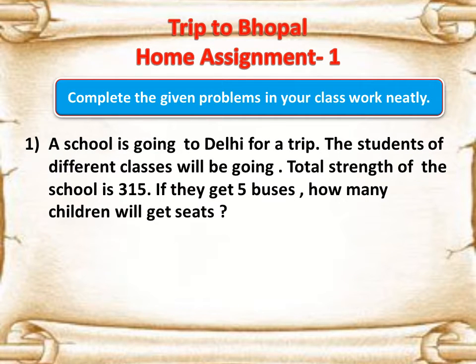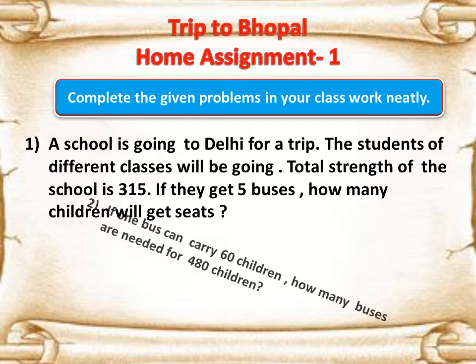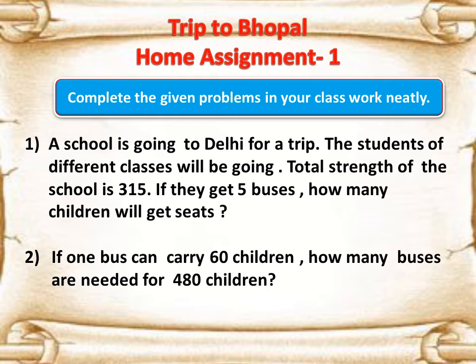First one. A school is going to Delhi for a trip. The students of different classes will be going. Total strength of the school is 315. If they get 5 buses, how many children will get seats?